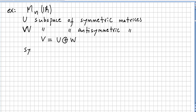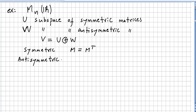First, let us see what a symmetric matrix is. A matrix M is symmetric if and only if M is equal to its transpose. The anti-symmetric matrices are the matrices where the transpose is equal to minus M.